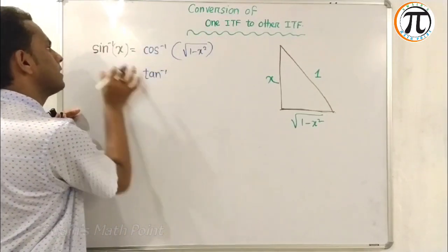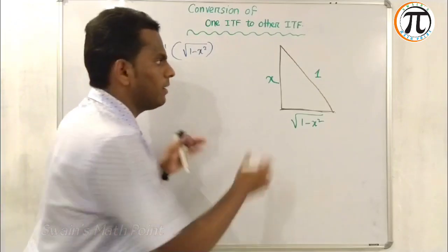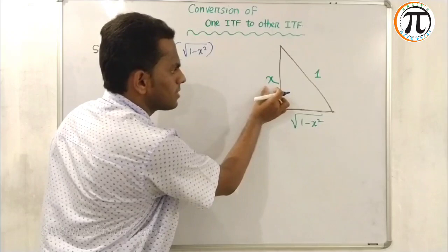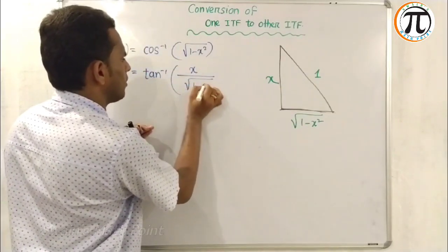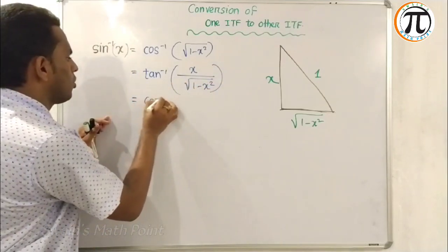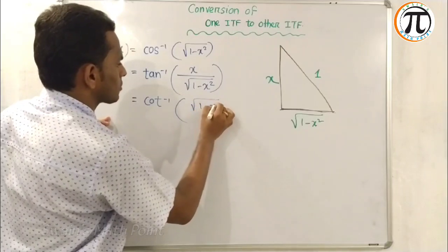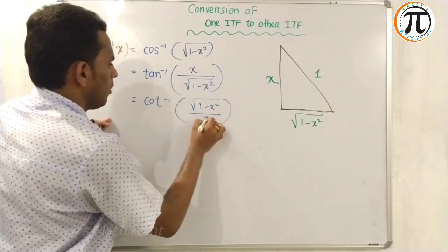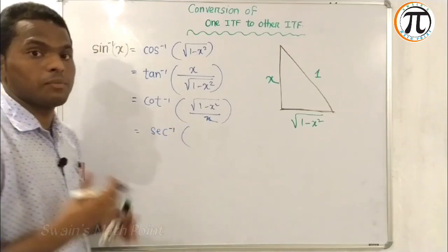If we want to convert to tangent, sine inverse X is converted into tangent inverse. Tangent equals P by B, so this is tangent inverse X upon square root of 1 minus X squared.